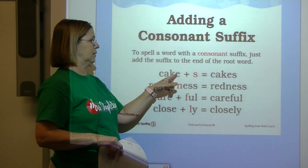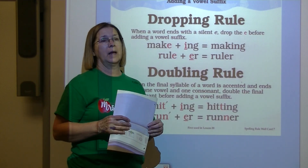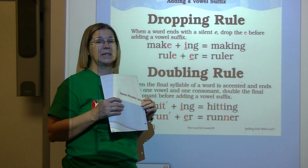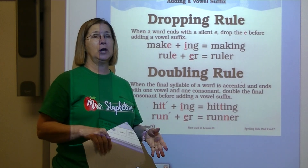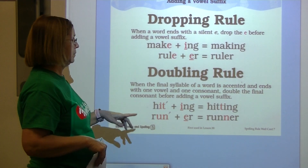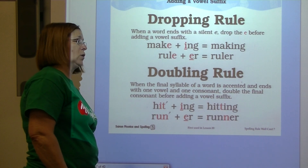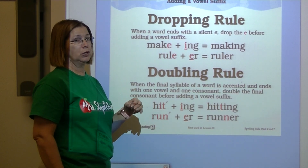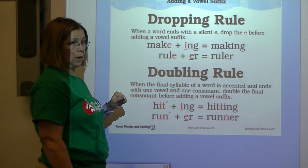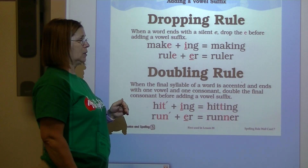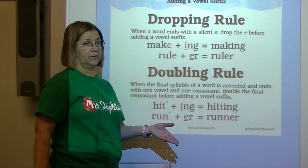If you want to add a consonant suffix to a word, just tack it on the end — no dropping, no doubling. But if you're going to add a vowel suffix to a word that has sneaky e at the end, you've got to drop that sneaky e and then add the vowel suffix. Sometimes we have to double the letter at the end of the word before adding the suffix. When the final syllable of a word is accented and ends with one vowel and one consonant, double that final consonant before you add a vowel suffix.